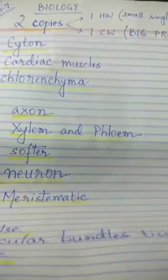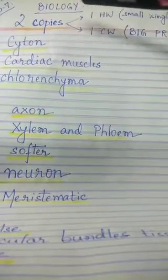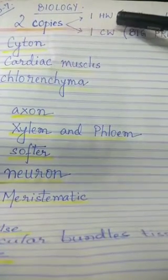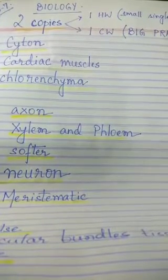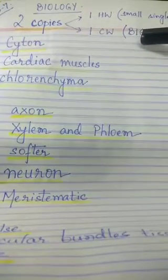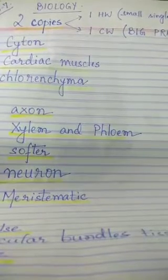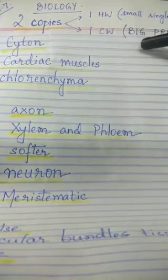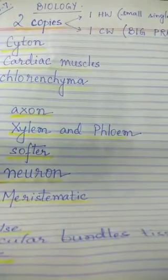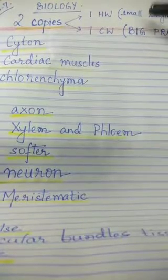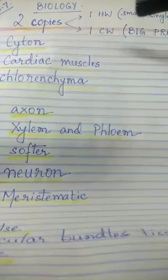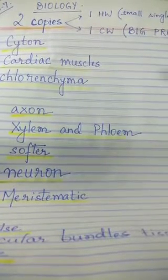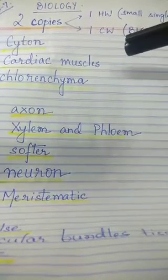So students, for standard 7th biology, you will make two copies: one as homework copy and one as classwork copy. The homework copy should be a small single-line copy and the classwork copy should be the big practical copy. The question answers of this chapter, Tissues, after I discuss, you will write in the classwork copy. Rest all homework or assignments you will write in your homework copy. Long and short question answers will go in your classwork copy. Let us begin the exercise of Tissues.